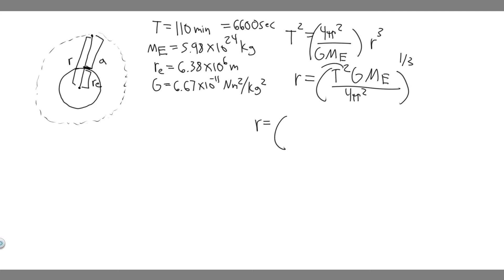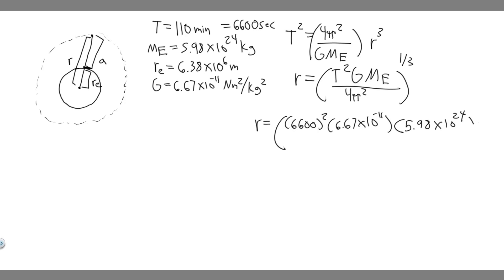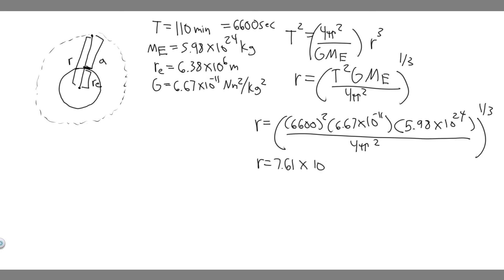All we have to do is plug in the numbers. r equals T squared, so 6,600 squared, times G the gravitational constant (6.67 × 10⁻¹¹), multiplied by the mass of the Earth (5.98 × 10²⁴) — whatever planet you're rotating around, in this case Earth — and then divide by 4π². This whole thing is to the one-third. When you plug this into your calculator, you get r = 7.61 × 10⁶ meters.